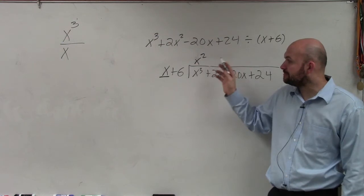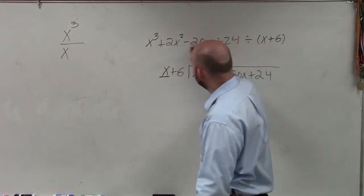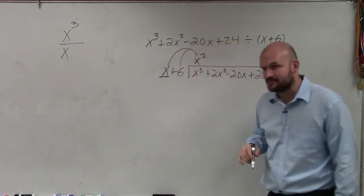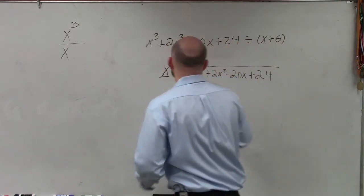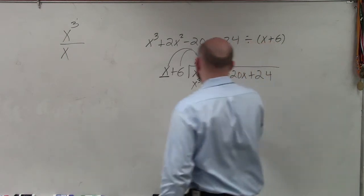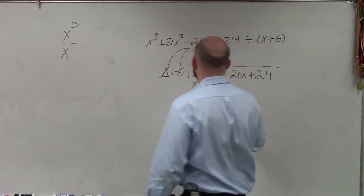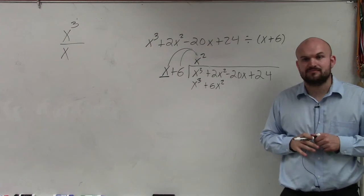x divides into x cubed x squared times. Now, what we simply do is we take x squared, and we multiply it by x, and we multiply it by 6. So x squared times x gives us x cubed. x squared times 6 gives us a positive 6x squared.